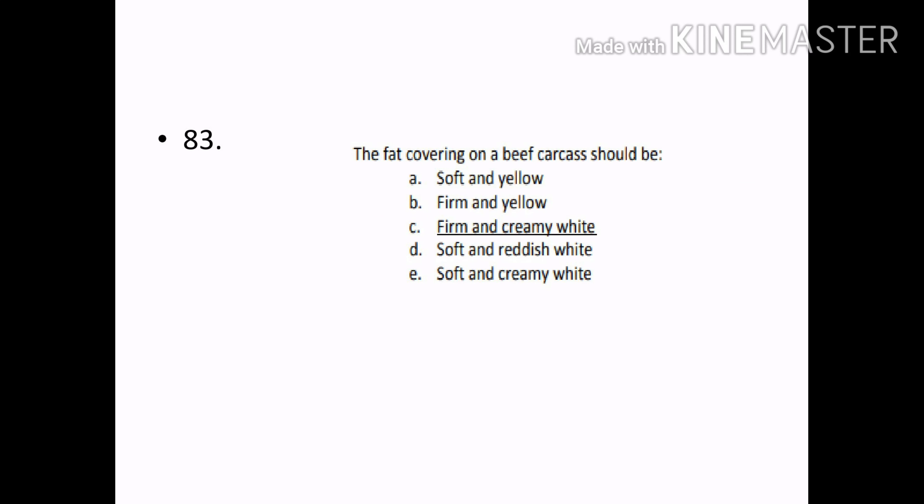The fat covering on a beef carcass should be: Options — Soft and yellow, Firm and yellow, Firm and creamy white, Soft and reddish white, Soft and creamy white. Correct answer: Option C — Firm and creamy white.